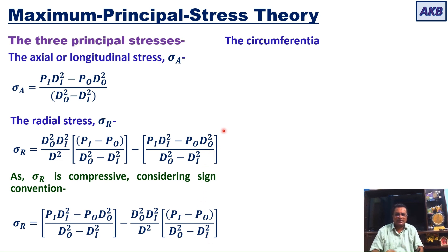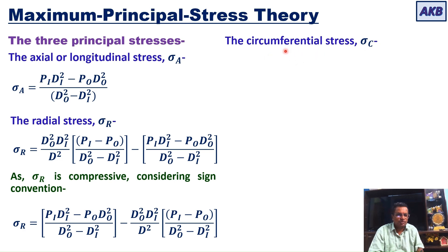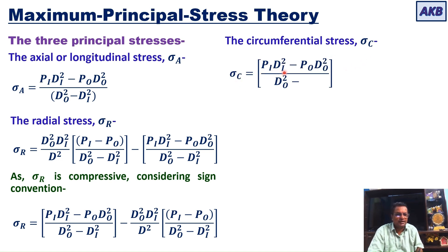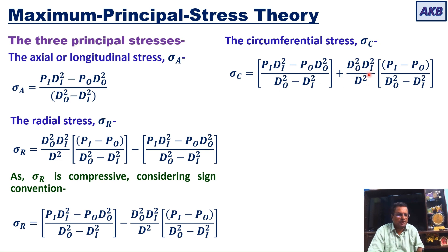The circumferential stress sigma c is given by: sigma c = (pi·di² − po·do²)/(do² − di²) + (do²·di²/d²)·(pi − po)/(do² − di²). Note that in the equation for sigma r one term is subtracted, whereas in the equation for sigma c the second term is added.